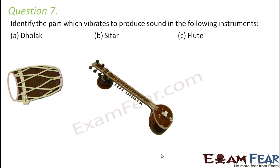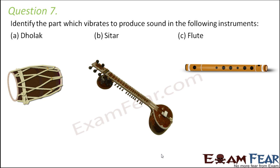Question number 7: Identify the part which vibrates to produce sound in the following instruments — dholak, sitar, and flute. In the case of dholak, there is a stretched membrane, and whenever a person beats on this membrane it vibrates and produces sound. So the stretched membrane is the vibrating part in a dholak.